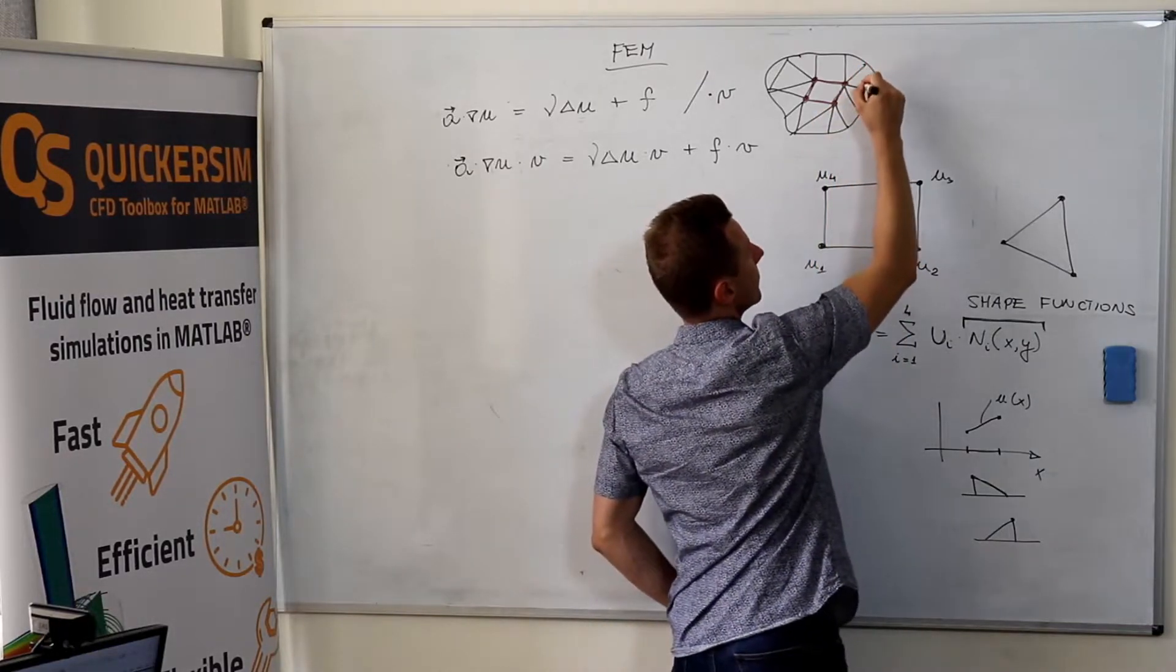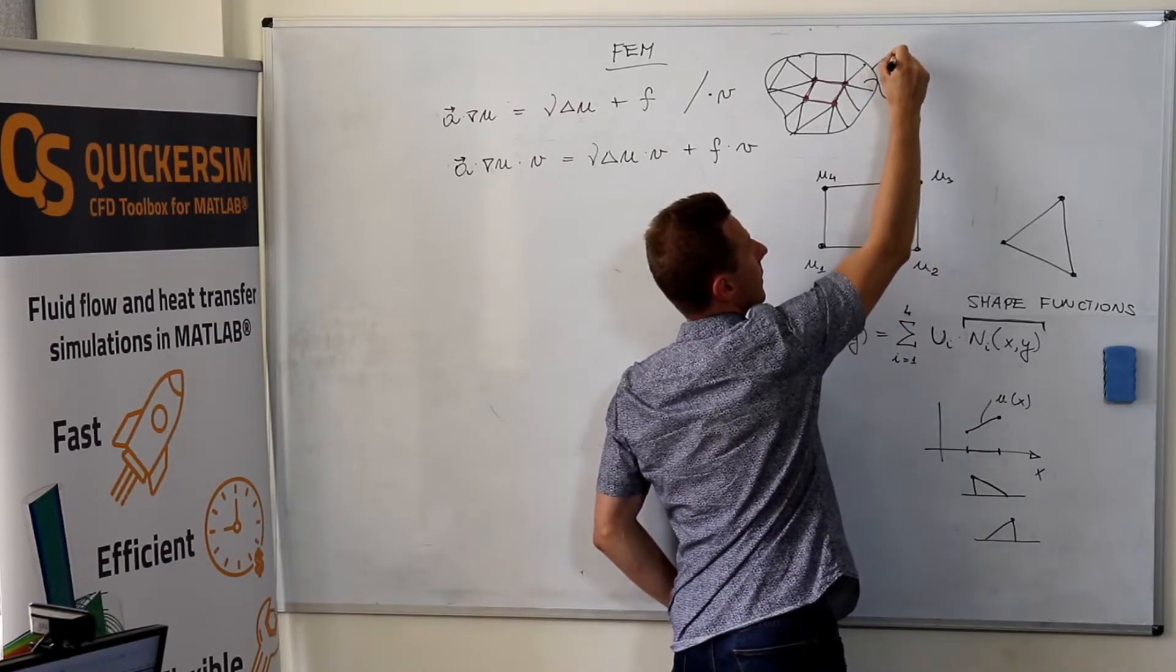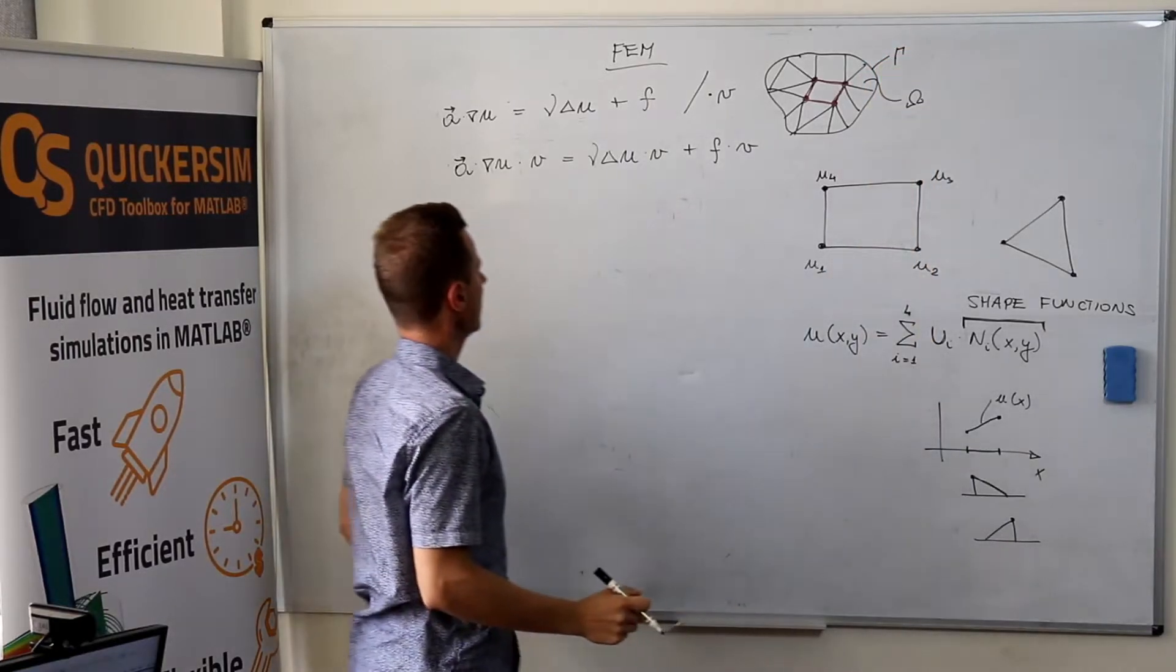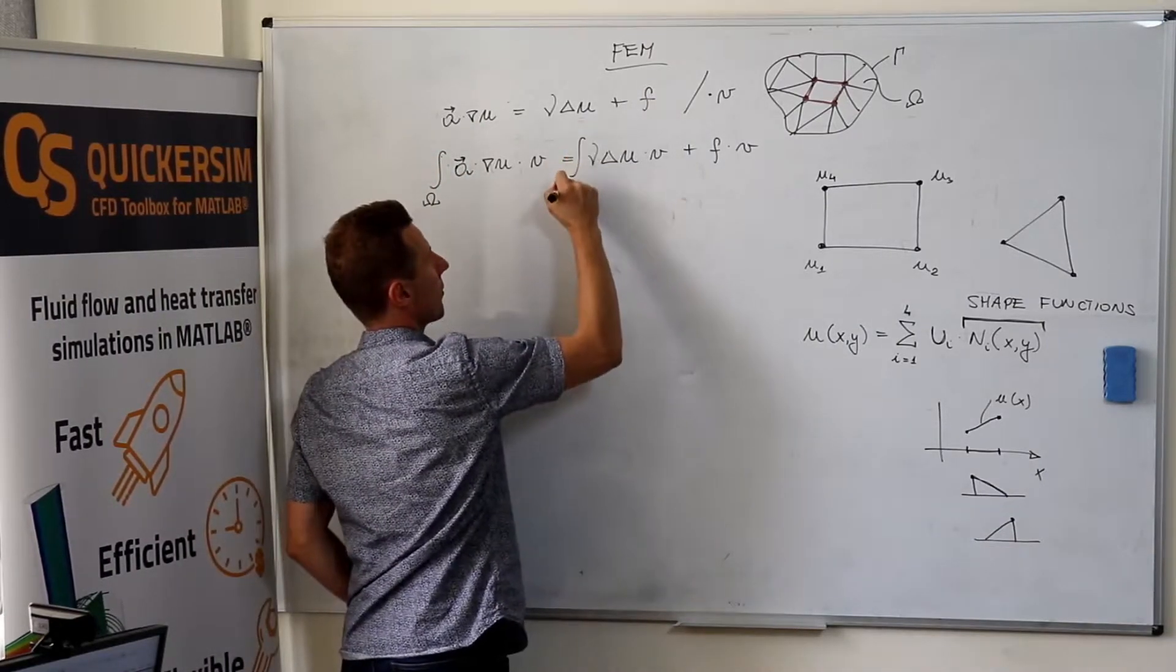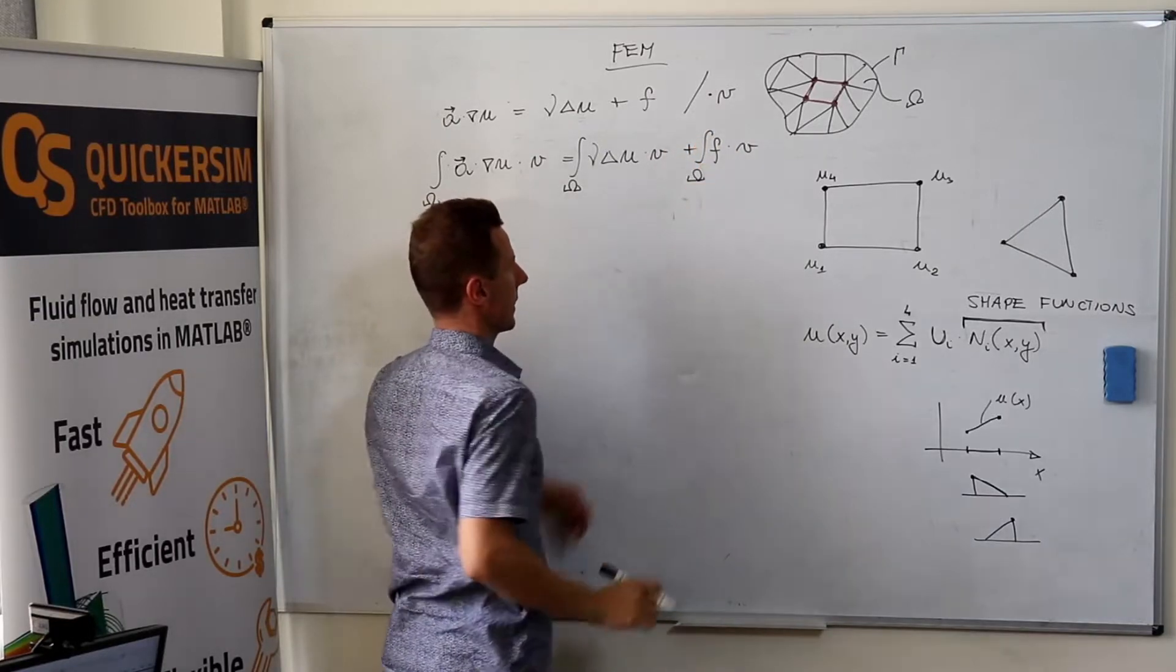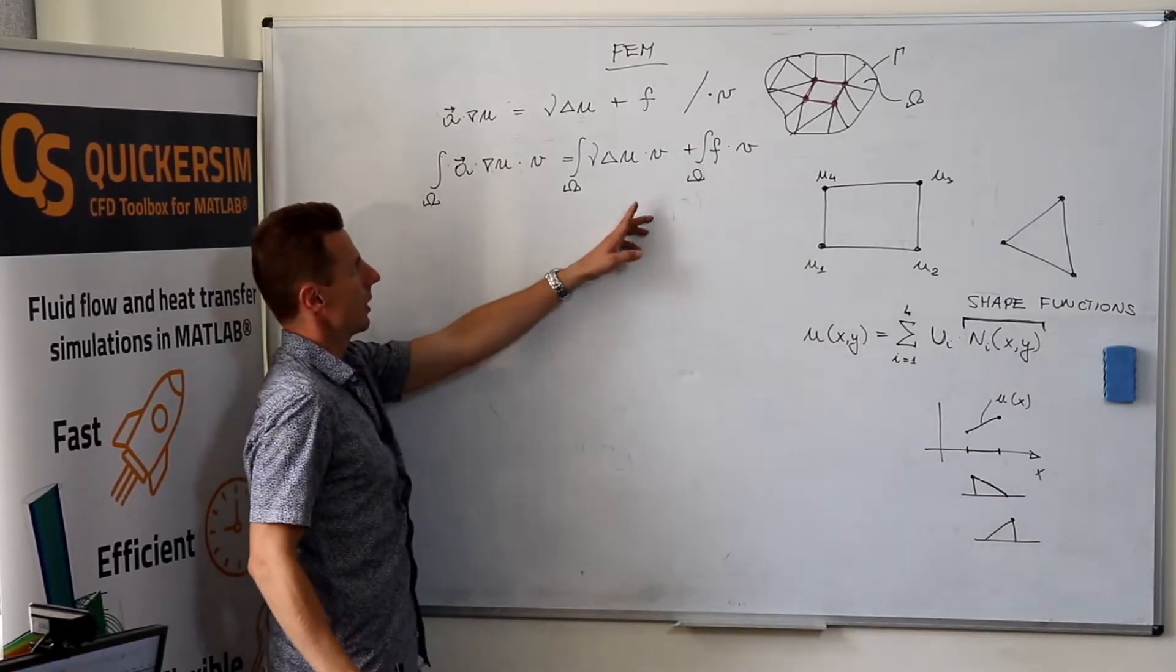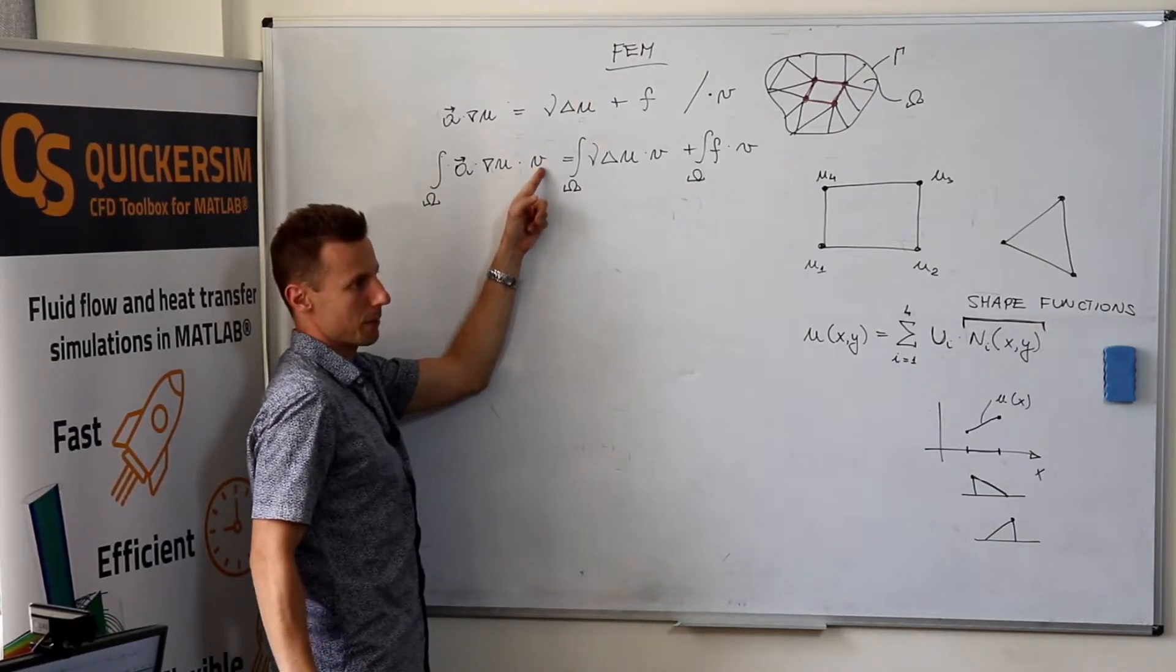So let it be omega and gamma. We want to integrate over the whole domain and I want to make it extremely clear.